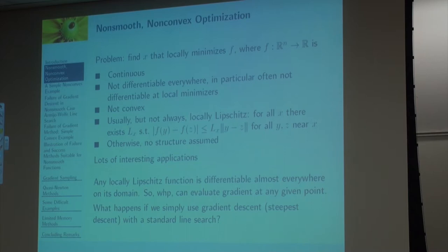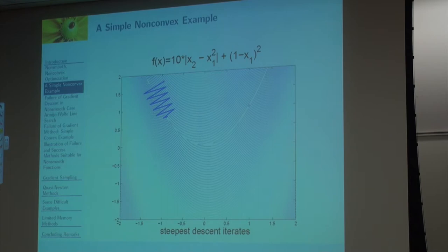That's Rademacher's theorem. So with high probability, given a point, you can evaluate a gradient at that point. So we could just start by asking what's going to happen if we just use gradient descent. Let's just go in the steepest descent direction and use a standard line search. Well, this is the kind of thing that will happen.